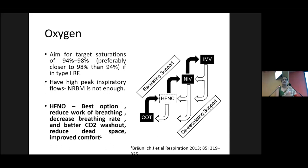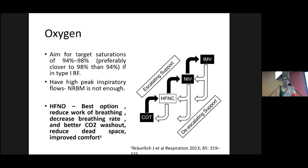The other important aspect of managing acute exacerbations is supportive care: proper oxygen, NIV use, mechanical ventilation when needed, symptomatic management, and palliative and end-of-life care. It's crucial to optimize oxygen early, targeting saturation of 94–98%, preferably closer to 98%. These patients have high peak inspiratory flows due to VQ mismatch, so standard ward NRBM will not be effective. High-flow nasal oxygen is the best option — it reduces work of breathing, decreases breathing rate, improves CO2 washout, reduces dead space, and is comfortable for the patient using a nasal cannula. We can provide flow rates with FiO2 ranging from 21 to 100%.